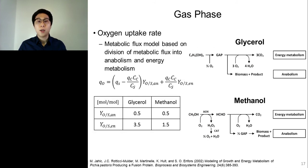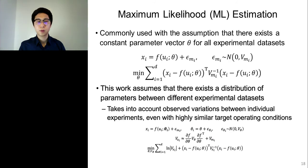For oxygen uptake rate, a metabolic flux model was introduced based on the division of metabolic flux into anabolism and energy metabolism. Oxygen yield coefficients for anabolism and energy metabolism were calculated from these reaction networks. For parameter estimation needed for the model, maximum likelihood estimation was applied. Maximum likelihood estimation is commonly used in the literature, assuming that there exists a constant parameter vector for all experimental data sets.